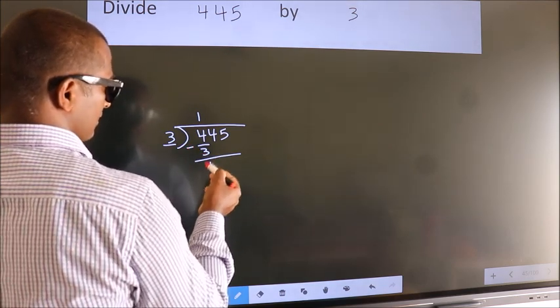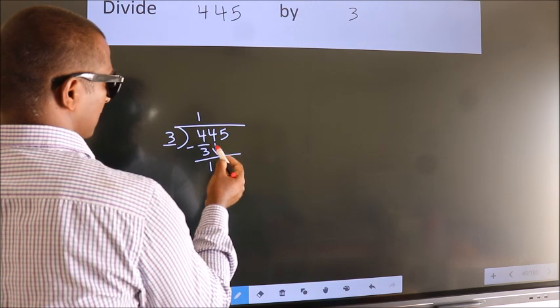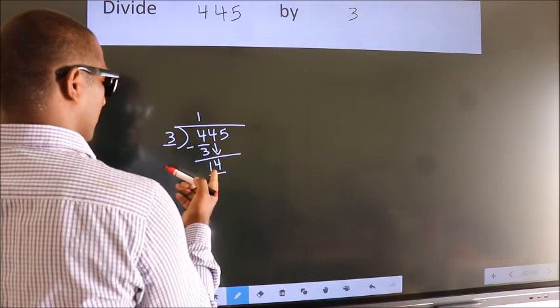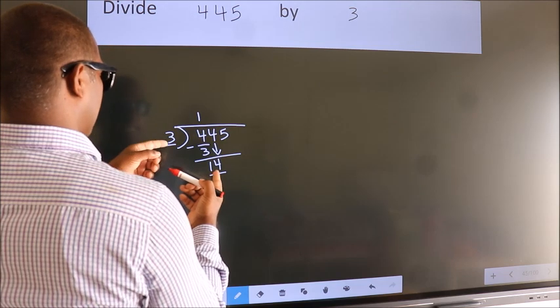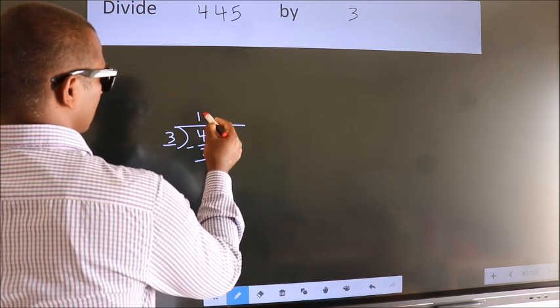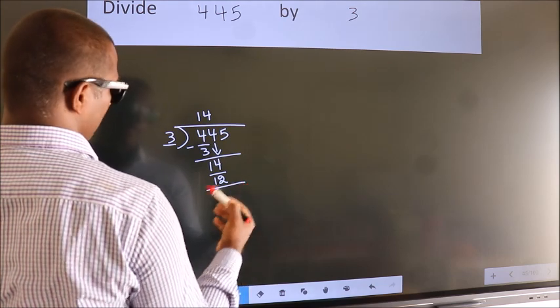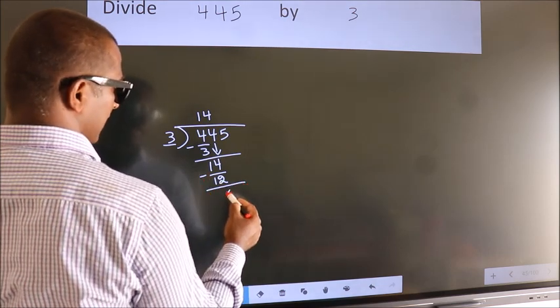After this, bring down the beside number. So 4 down, making 14. A number close to 14 in the 3 table is 3 times 4 equals 12. Now we subtract. We get 2.